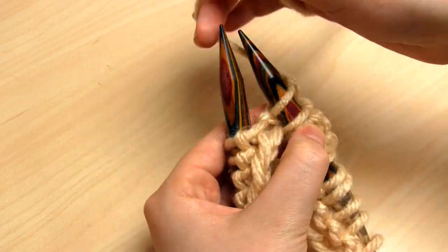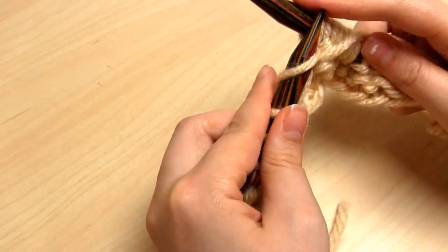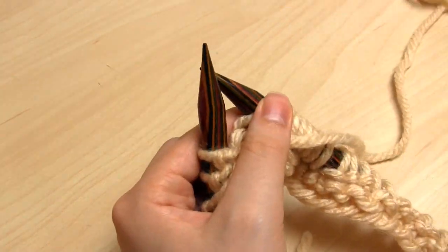So you do 3 purls, 5 knits, 3 purls, 5 knits, 3 purls, 5 knits until the end of the row.